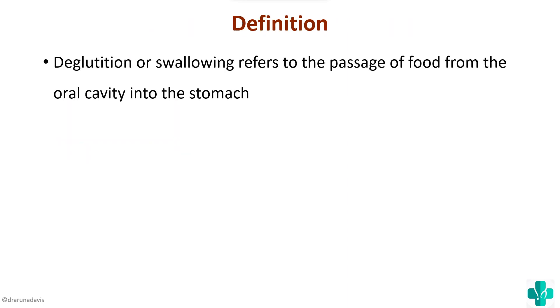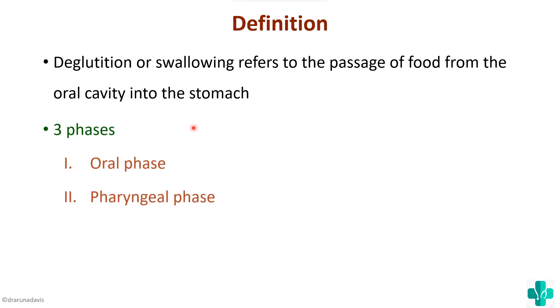You can start off with the definition: deglutition or swallowing refers to the passage of food from the oral cavity to the stomach. It has three phases which are the oral phase, pharyngeal phase, and esophageal phase. We have to know in detail about each of these phases.